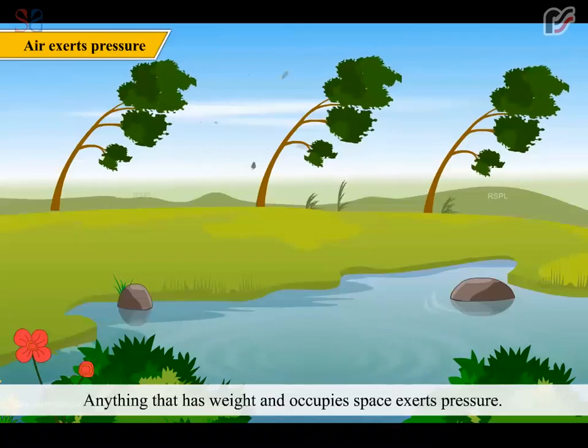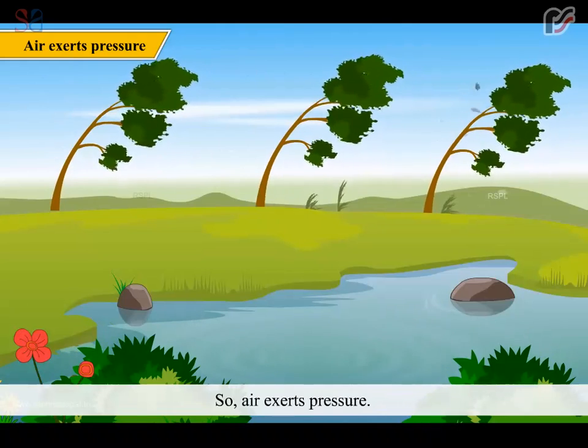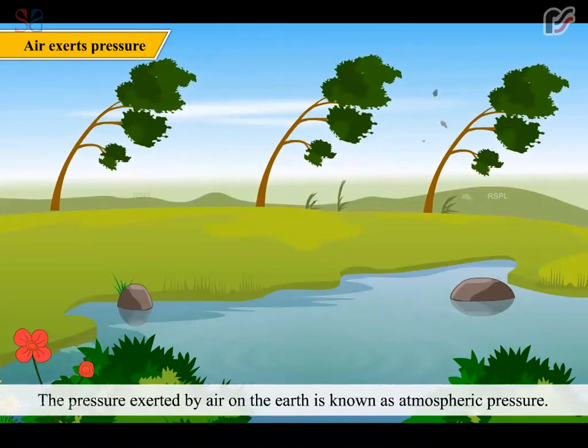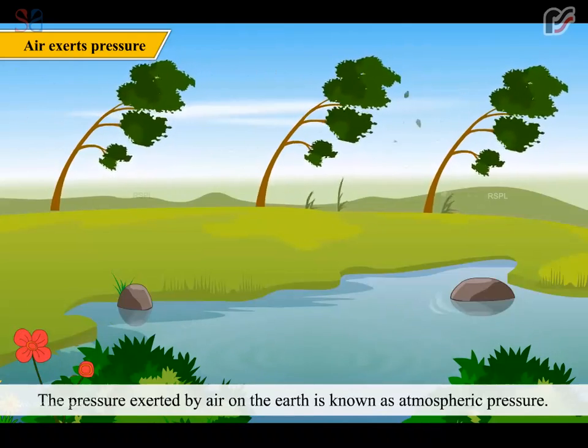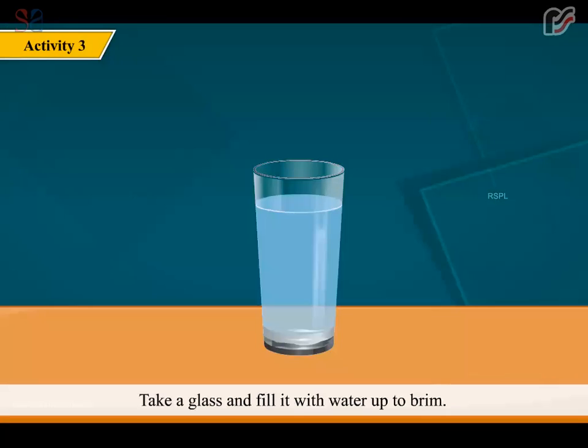Anything that has weight and occupies space exerts pressure. So, air exerts pressure. The pressure exerted by air on the earth is known as atmospheric pressure. Take a glass and fill it with water up to brim.